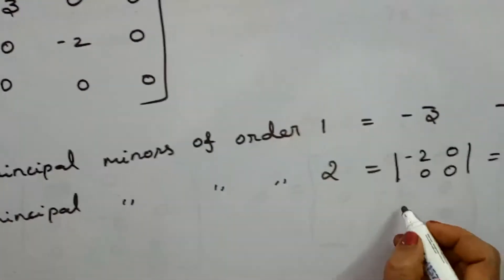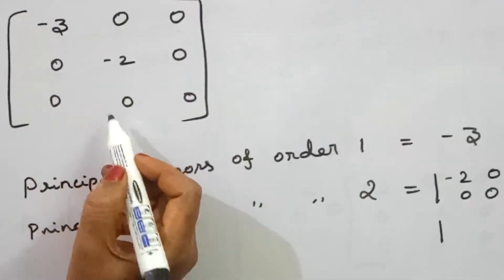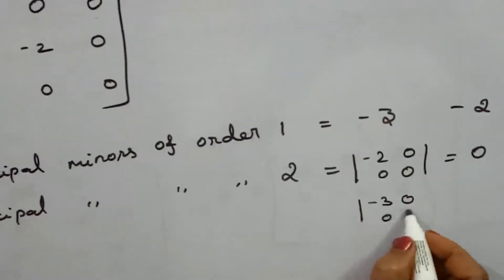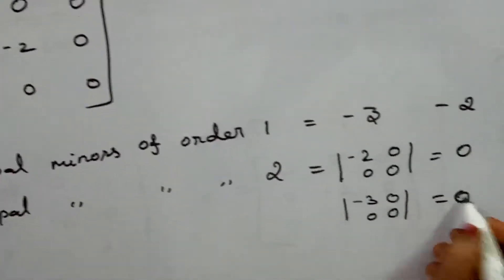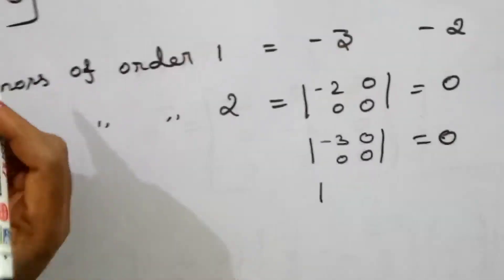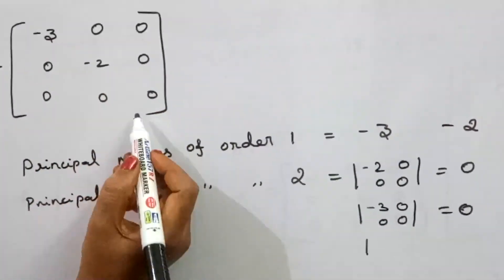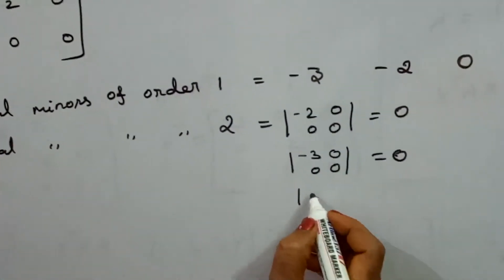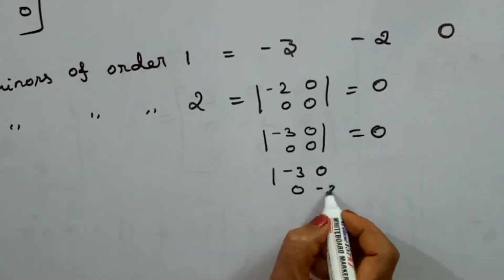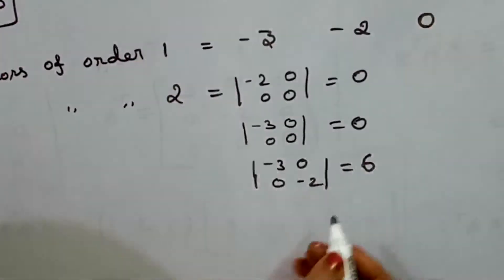The second order minor using first row and second column balance elements: minus 3, 0, 0, minus 2 equals 6. Then the third order minor uses the third row and third column. The balance elements give: minus 3, 0 / 0, minus 2, which equals 6. This value exists and is greater than 0.